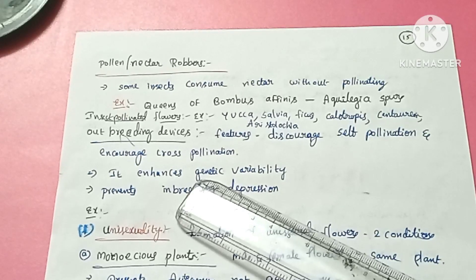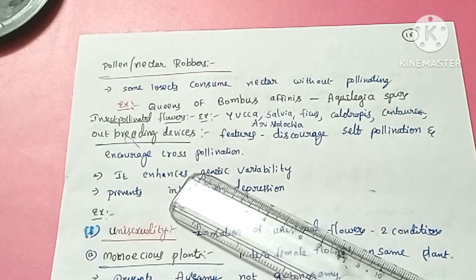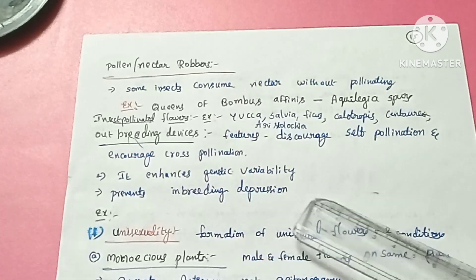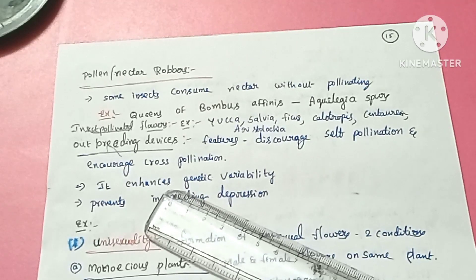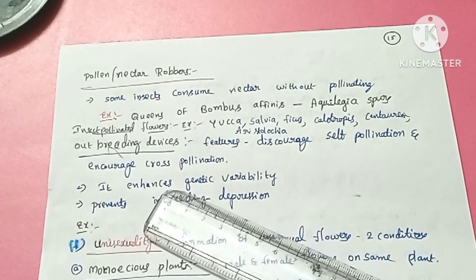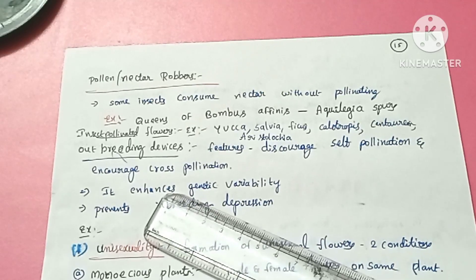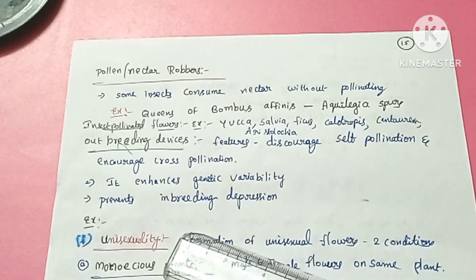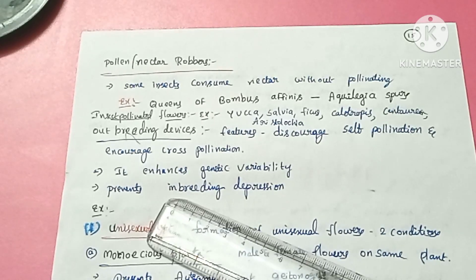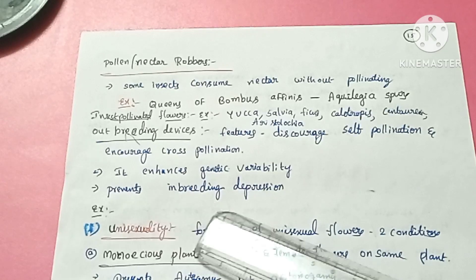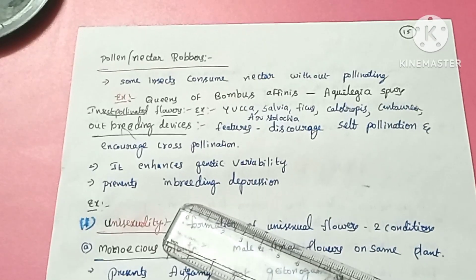The next topic is outbreeding devices. Outbreeding devices are features which discourage self-pollination and encourage cross-pollination. The importance of cross-pollination is that it enhances genetic variability — plants have genetic variability, diversity, and change.